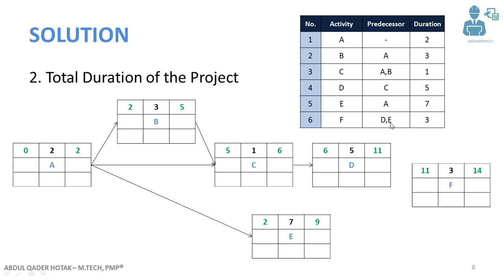Activity F has two predecessors: activity D and E. Both activity D and E must be completed in order to start activity F. As we can see, D and E are linked to activity F. The total duration of the project is the end date of activity F, which is day 14. So the total duration will be 14 time units.